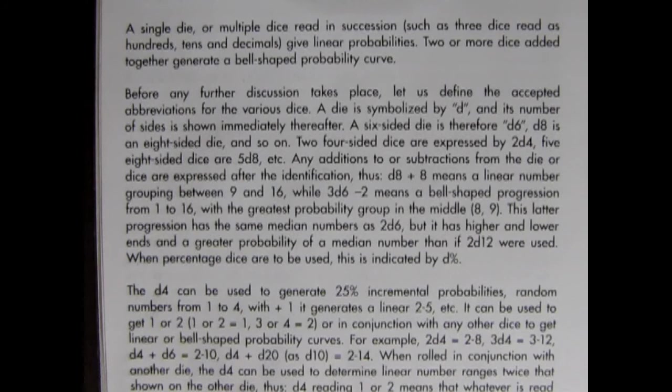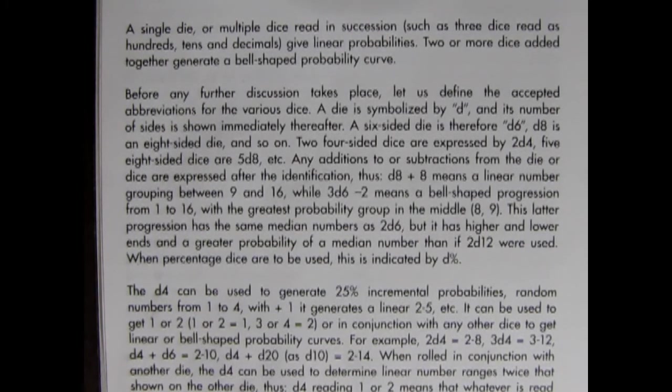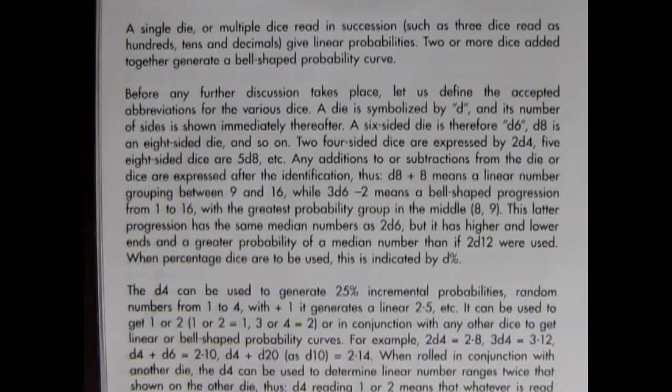Any additions to or subtractions from the die or dice are expressed after the identification. Thus D8 plus 8 means a linear number grouping between 9 and 16, while 3D6 minus 2 means a bell-shaped progression from 1 to 16, with the greatest probability group in the middle, 8 and 9. This latter progression has the same median numbers as 2D6, but it has higher and lower ends.